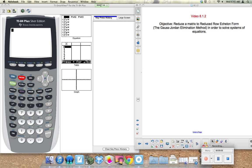This is video 812 and the goal of this video is to reduce a matrix to reduced row echelon form in order to solve systems. But as you saw in class, it is a monotonous and long process.